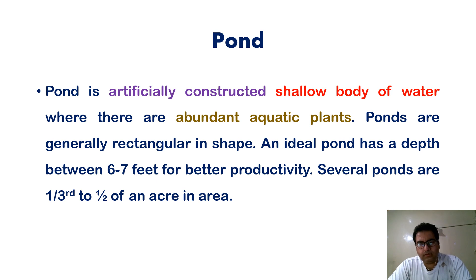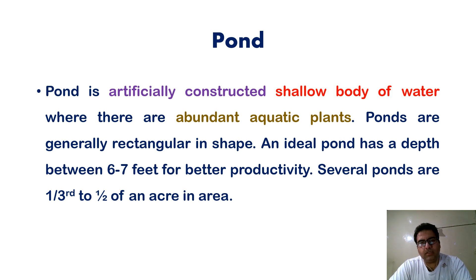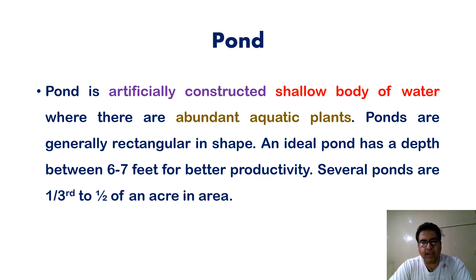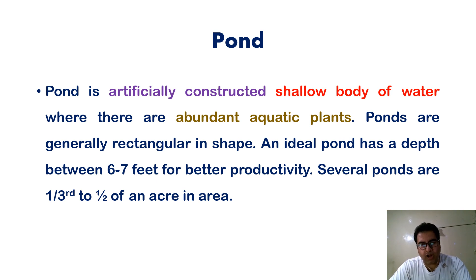When we think of carrying on fish culture, we require a pond. A pond is generally defined as an artificially constructed shallow body of water where there are abundant aquatic plants. Ponds are generally rectangular in shape. An ideal pond has a depth between 6 to 7 feet for better productivity. Several ponds are one-third to one-half of an acre in area.